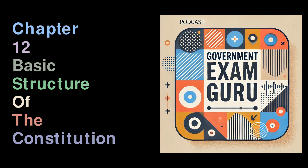The Court concluded that while Parliament can amend fundamental rights, it cannot alter the Basic Structure of the Constitution. This means certain fundamental principles that hold the Constitution together cannot be changed, even by Parliament.